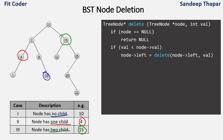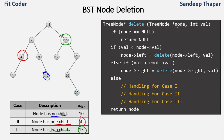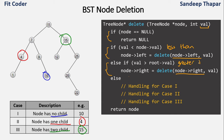This is the pseudocode for node deletion. We have a delete function which takes two parameters: a node and a val, where val is the key that has to be deleted. We check if node is null as a basic sanity check. Then we check if the value is less than the node — we go to the left subtree. If the value is greater, we go to the right subtree. This is the basic traversal to reach the node we want to delete, similar to searching a node in the BST. The else branch handles the case where the value is equal to the node's value, meaning we have reached the node to delete.